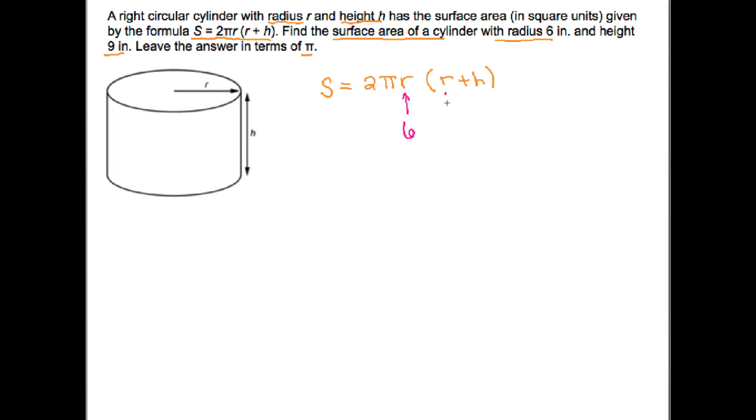r is 6 inches, so it would appear here as well as here. And then the height is 9 inches, that would appear here. So my surface area is equal to 2 pi times r, which is 6, times r plus h, which is 6 plus 9.